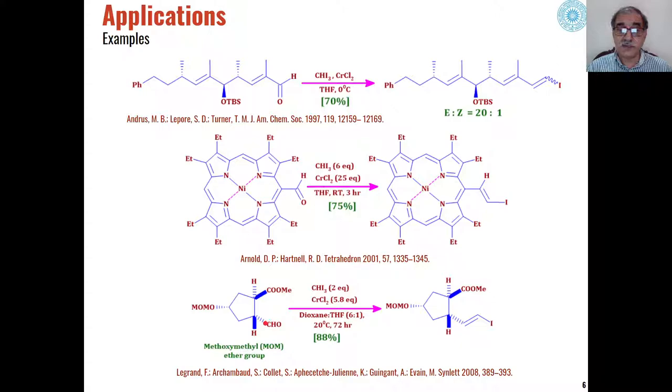In the third example where we have methoxy-methyl ether group as a protecting group and an ester group is also present, the olefination is a selective olefination where the aldehyde group is oxidized to vinyl iodide. Olefination takes place at the aldehyde group in presence of iodoform and chromium chloride and these two groups, the methoxy-methyl ether group and the ester group, are not affected. This again is a selective reaction for the synthesis of vinyl iodides from aldehydes.